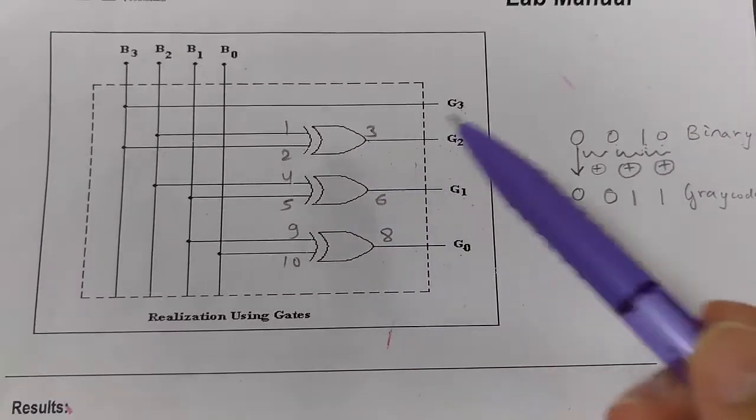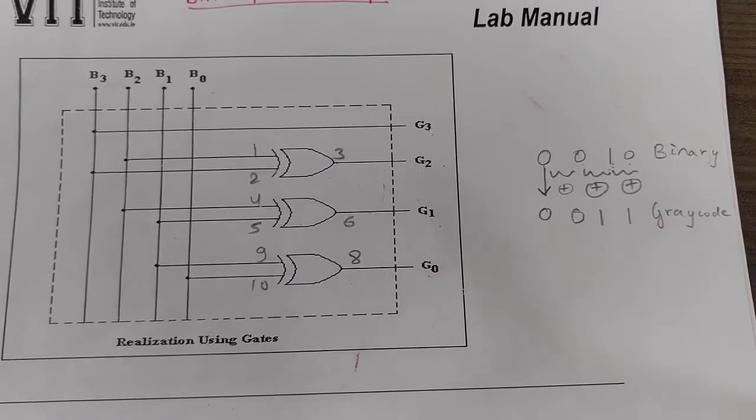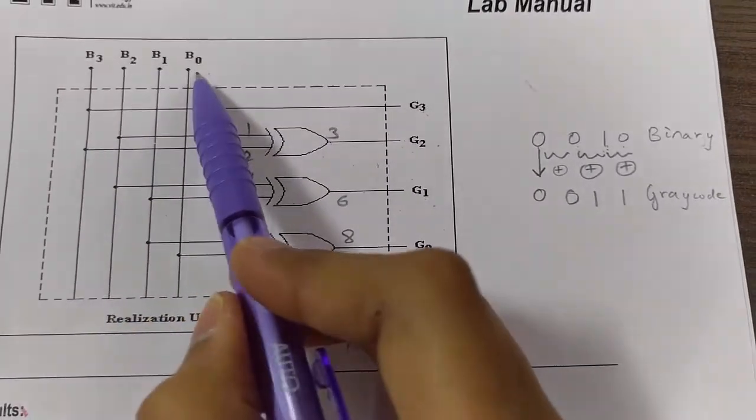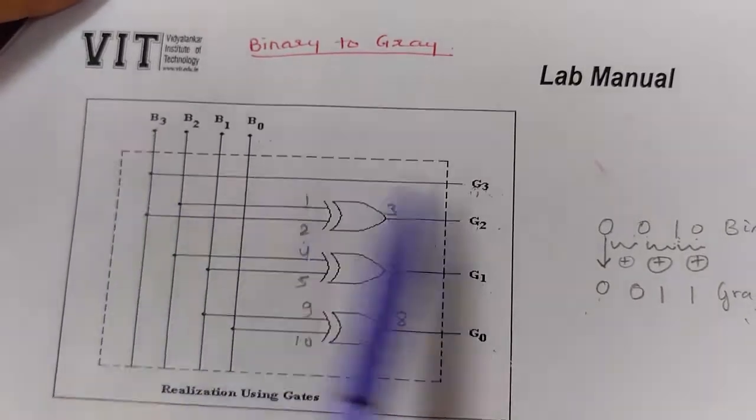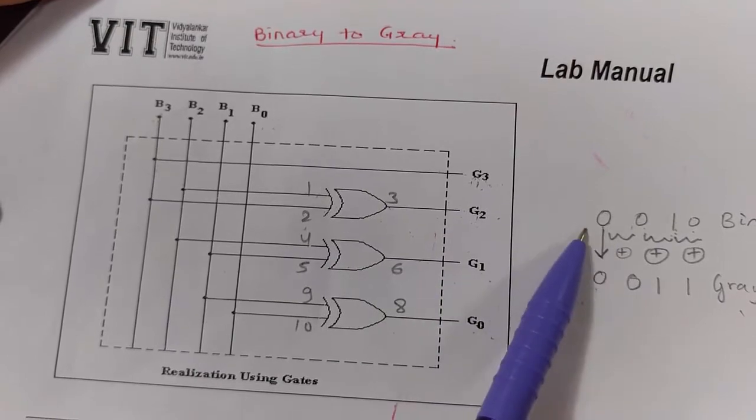Now the circuit for this is as follows: we use three XOR gates from IC 7486. These are the binary inputs and these are the grey code outputs we obtained. We connect binary input B3 to grey code output G3 directly, because in this conversion the first digit is written as it is.